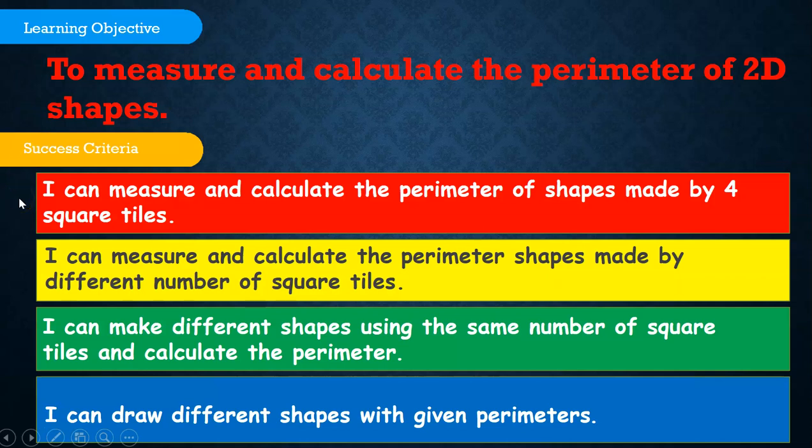Success Criteria: I can measure and calculate the perimeter of shapes made by 4 square tiles. I can measure and calculate the perimeter of shapes made by different number of square tiles. I can make different shapes using the same number of square tiles and calculate the perimeter. And I can draw different shapes with given perimeters.